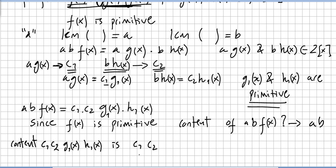The product of two primitive polynomials is primitive. So the content of c1·c2·g1(x)·h1(x) — since g1(x)·h1(x) is primitive — the content will simply be c1 times c2.